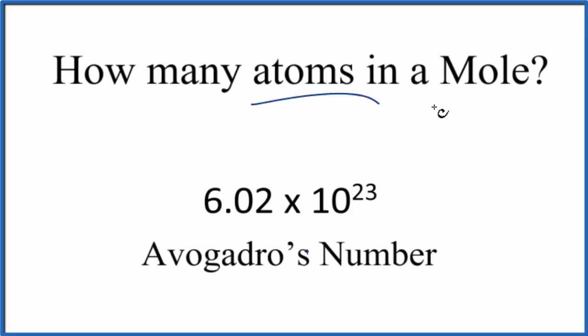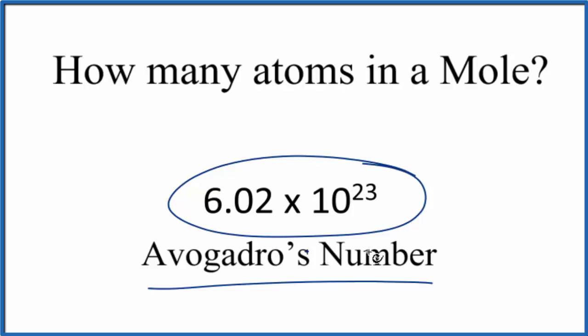In this video, we'll look at how many atoms there are in a mole. The short answer is that we have Avogadro's number of atoms in one mole, 6.02 times 10 to the 23rd. So what does that mean?